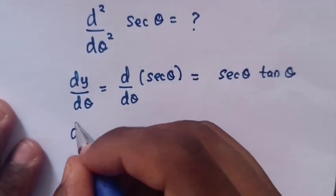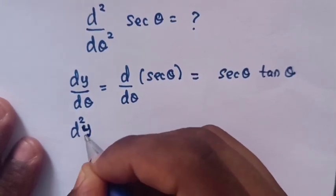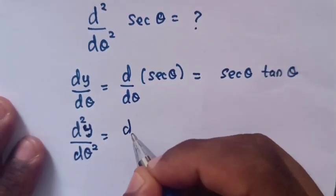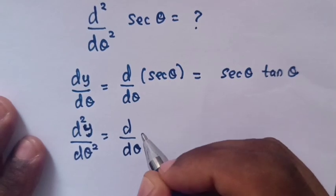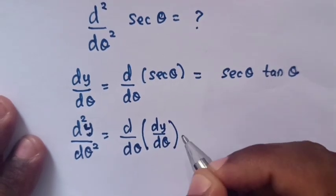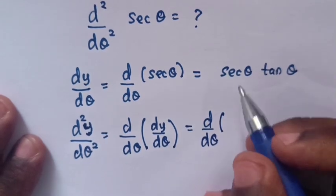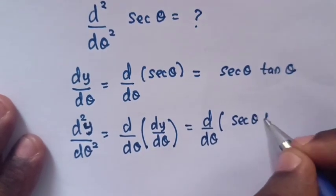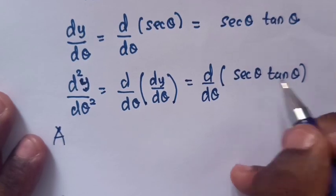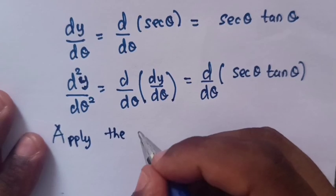In the next step, we will take the second derivative. d²y/dθ² is equal to d/dθ of the first derivative dy/dθ. This is equal to d/dθ of sec θ tan θ. Because it is the product of sec θ and tan θ, we will apply the product rule.